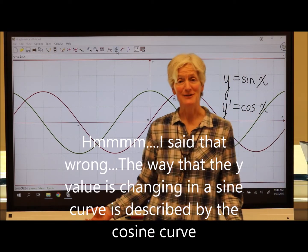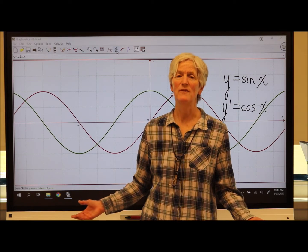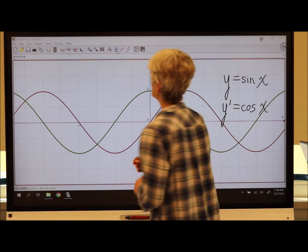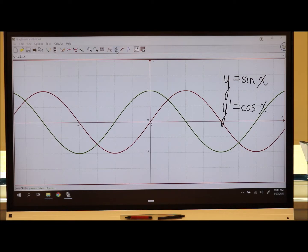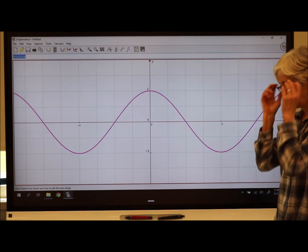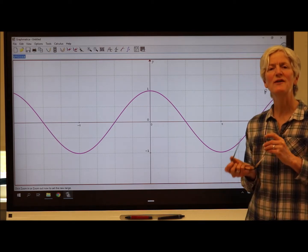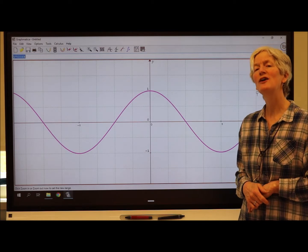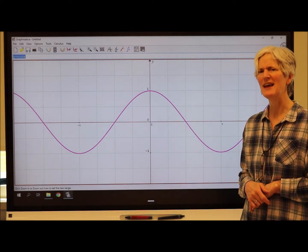You know what I'm going to ask next. What's the derivative of a cosine curve? So let's go ahead and sketch a cosine curve. There's a cosine curve. And make a sketch of this cosine of x curve. Take a look at the derivative and then try to decide what the equation of that derivative is.